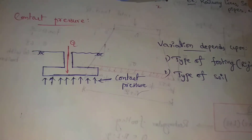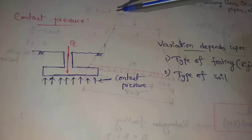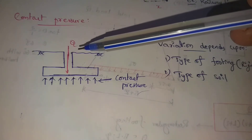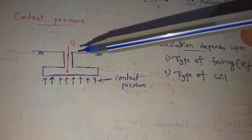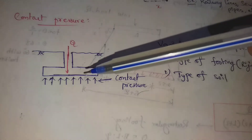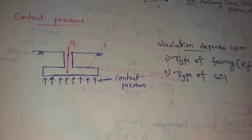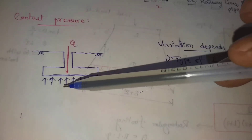Next topic: contact pressure. This is the contact pressure excited by the foundation of soil on the underside of the footing. For example, this is ground level, and at some certain depth below the ground level, below the footing, the contact pressure acts.